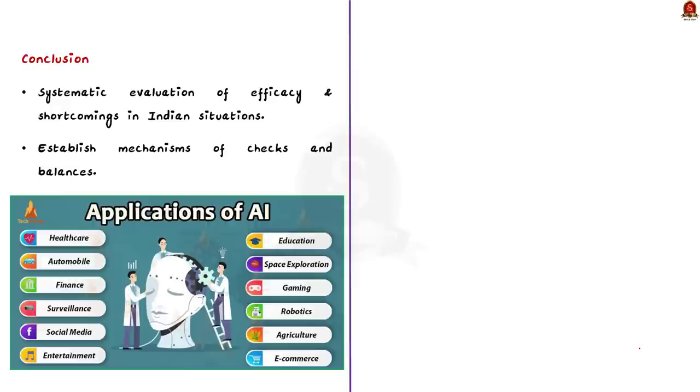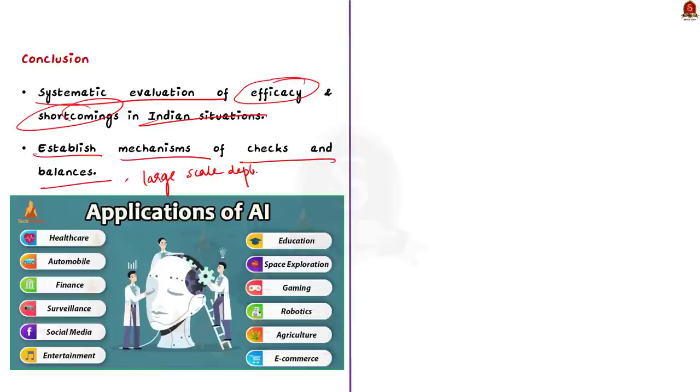If you are asking me what can be done? We understand that AI holds tremendous potential in different sectors like public health, agriculture, transportation and governments. As we exploit India's advantages in them, we need more discussions to make AI systems responsible, fair and just to our society. For that to happen, we need a systematic evaluation of their efficiency and shortcomings in Indian situations. We need to establish mechanisms of checks and balances before we go for a large-scale deployment of AI systems. All we need is an India-specific framework that can address all these issues.